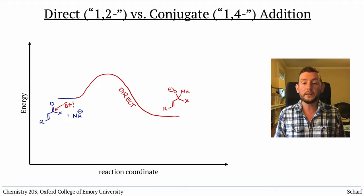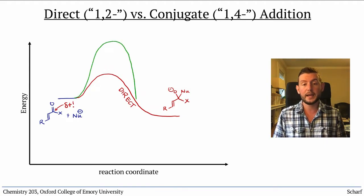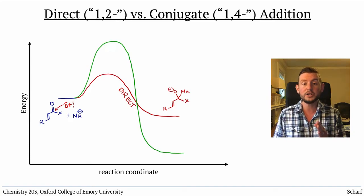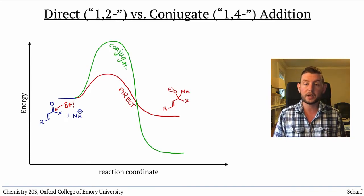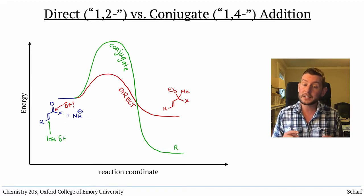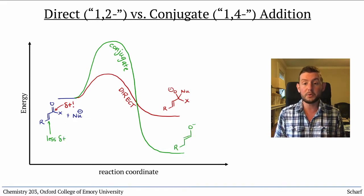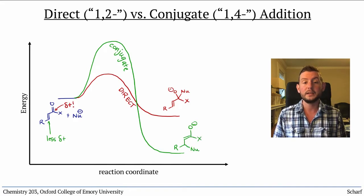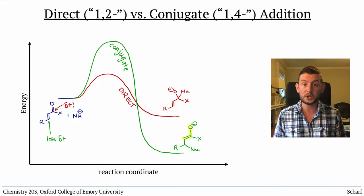Meanwhile, the conjugate addition pathway has a higher activation energy barrier because the beta carbon has a somewhat smaller partial positive charge. But the product enolate is more stable than the tetrahedral intermediate because the enolate is conjugated.